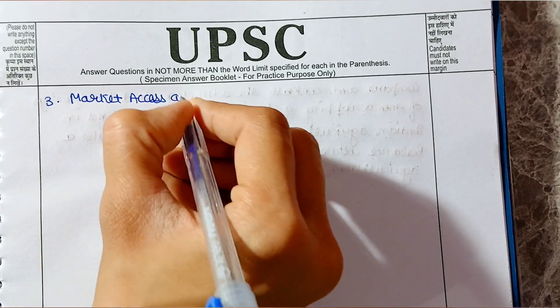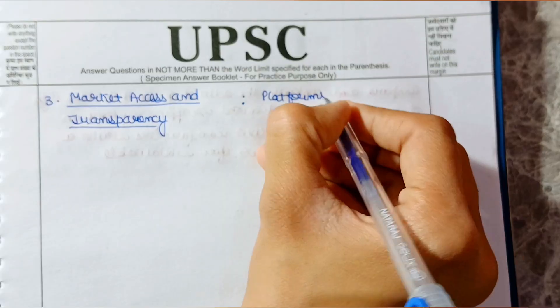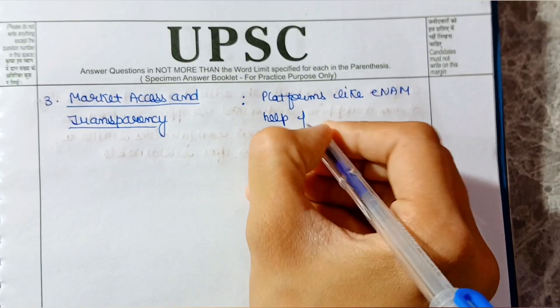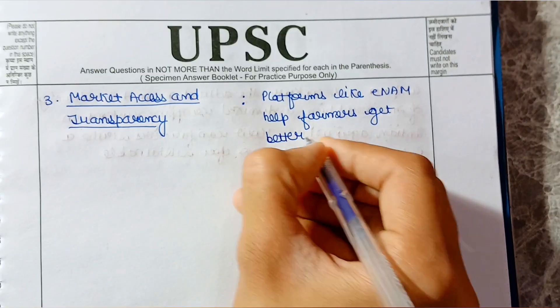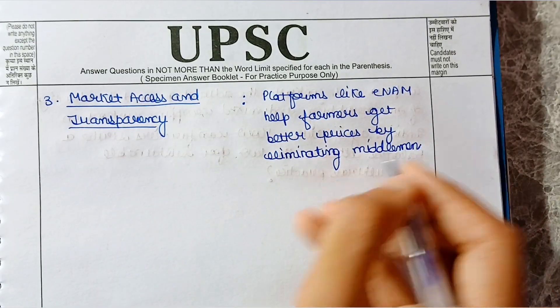Third point is market access and transparency. Platforms like E-NAM help farmers get better prices by eliminating middlemen.